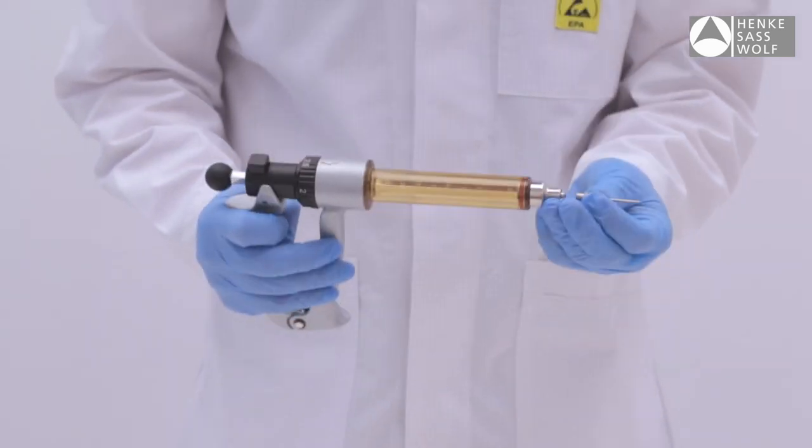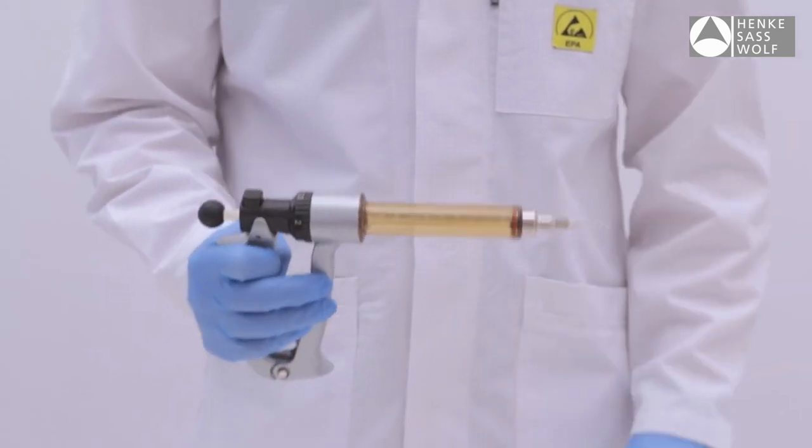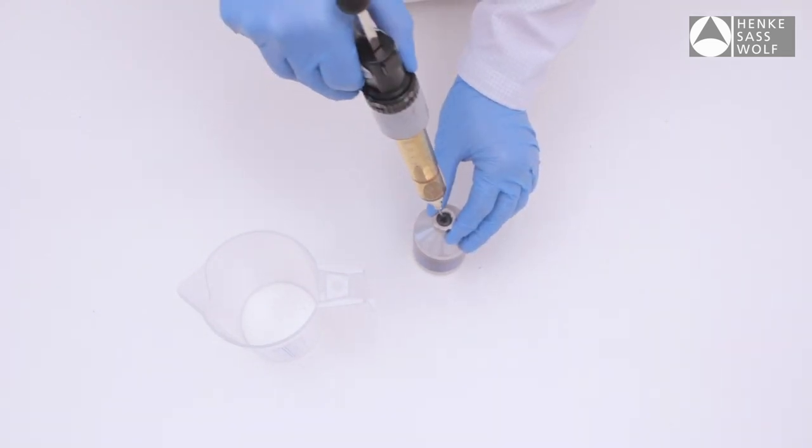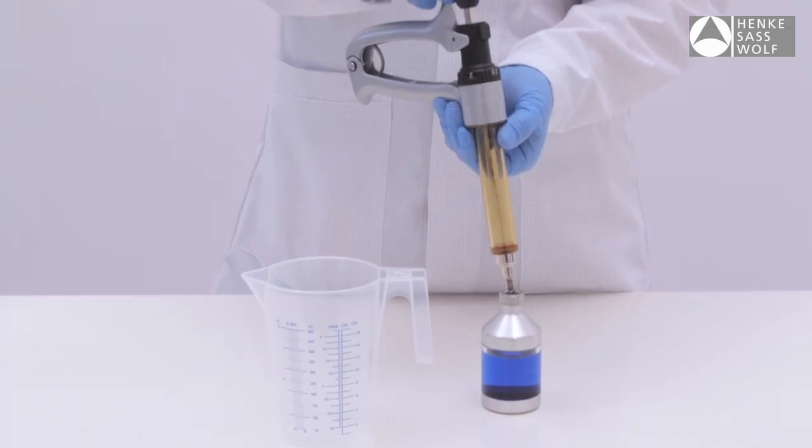Fit needle to syringe by turning the needle clockwise. Insert the needle into the rubber bung of the bottle. Pump air into bottle by pushing piston knob.